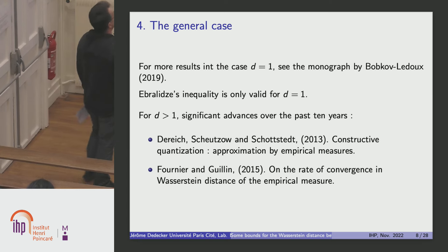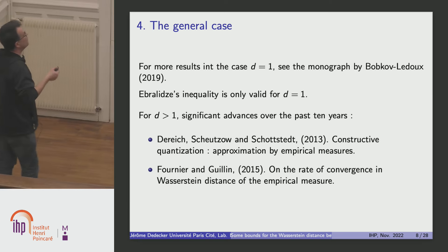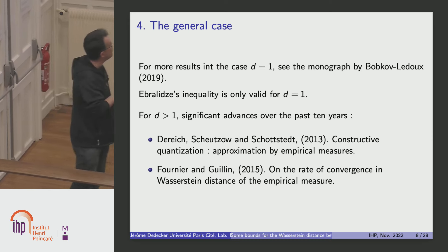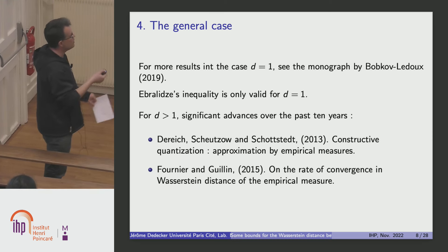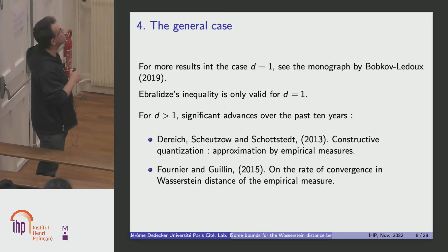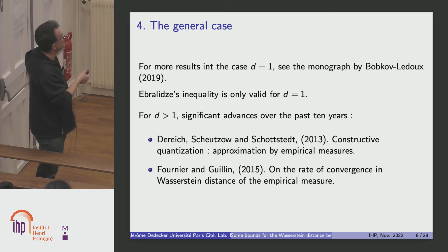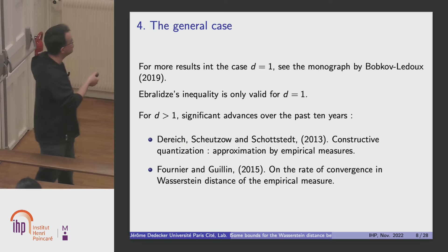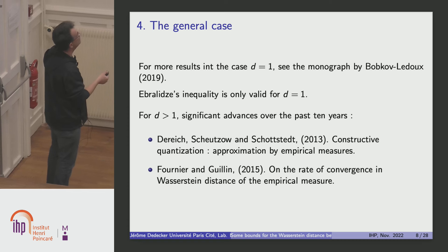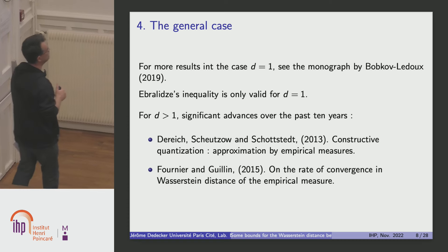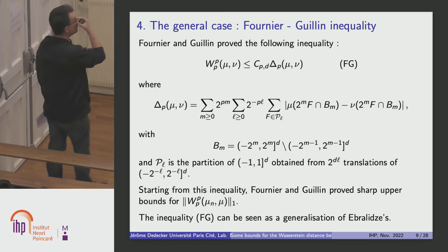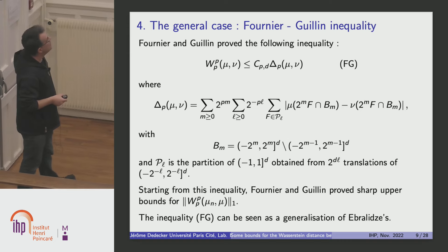For d greater than 1, there have been many interesting papers in the past 10 years. In particular, there are very precise inequalities in two papers: Dereich, Scheutzow and Schottstedt, and the paper just after by Fournier and Guillain. The two papers are not independent — the result by Fournier and Guillain is based on a lemma in the previous paper. We will use the following inequality by Fournier and Guillain.